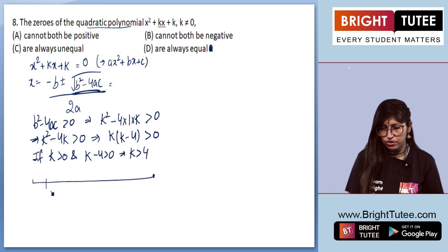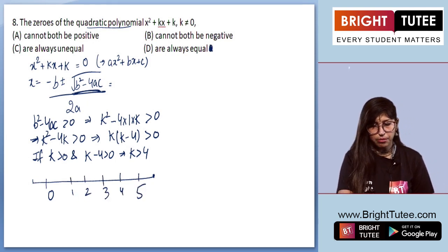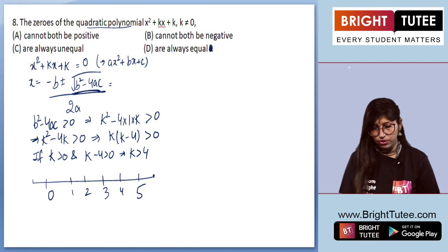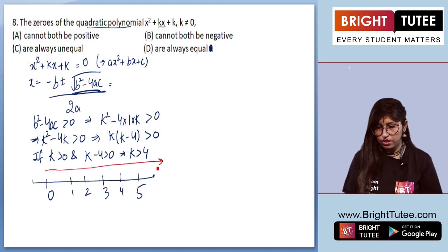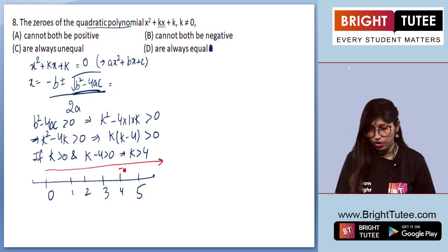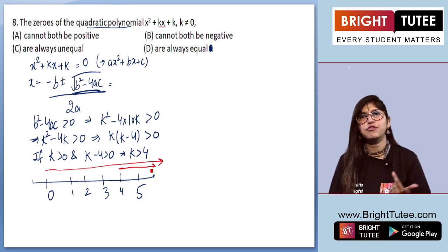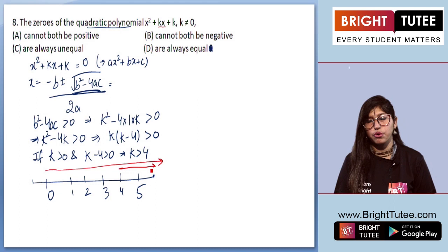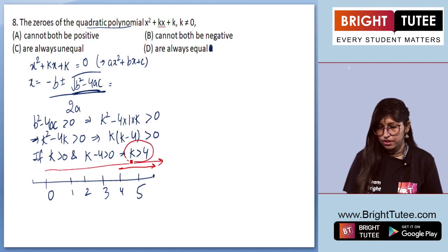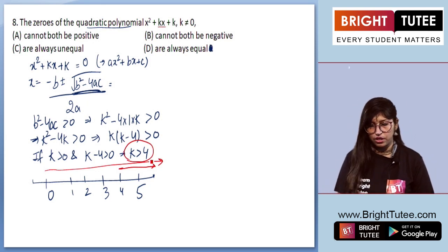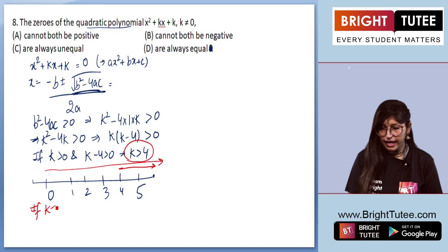On the number line, k > 0 covers everything to the right of 0, and k > 4 covers from 4 to infinity. The common region is k > 4 — so from 4 to infinity is the range for k in this case.